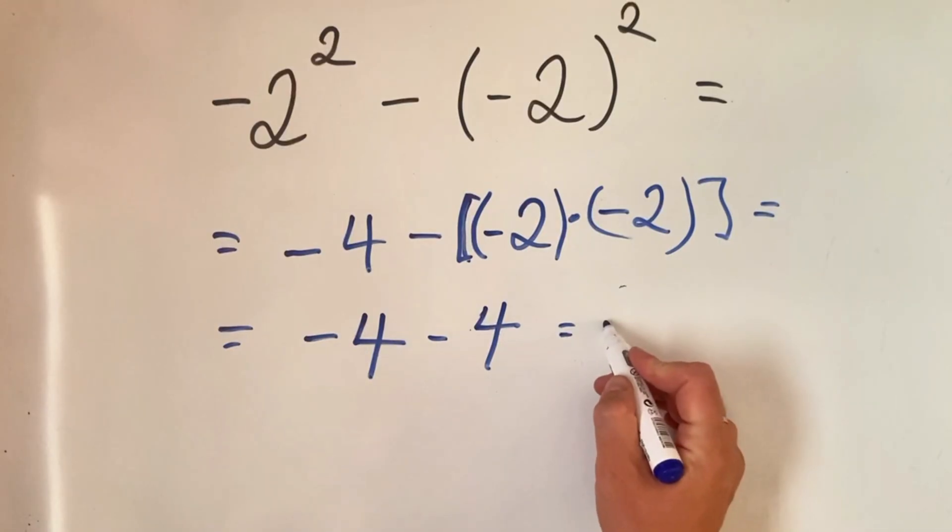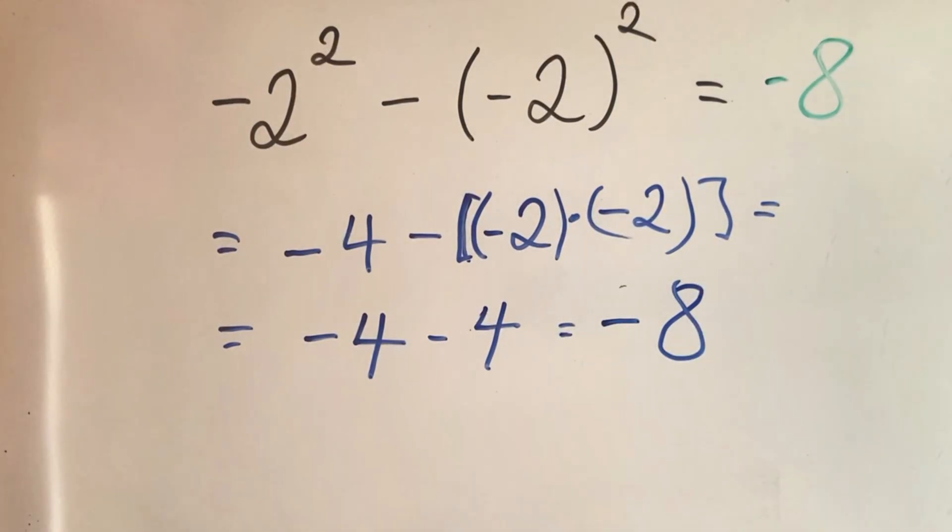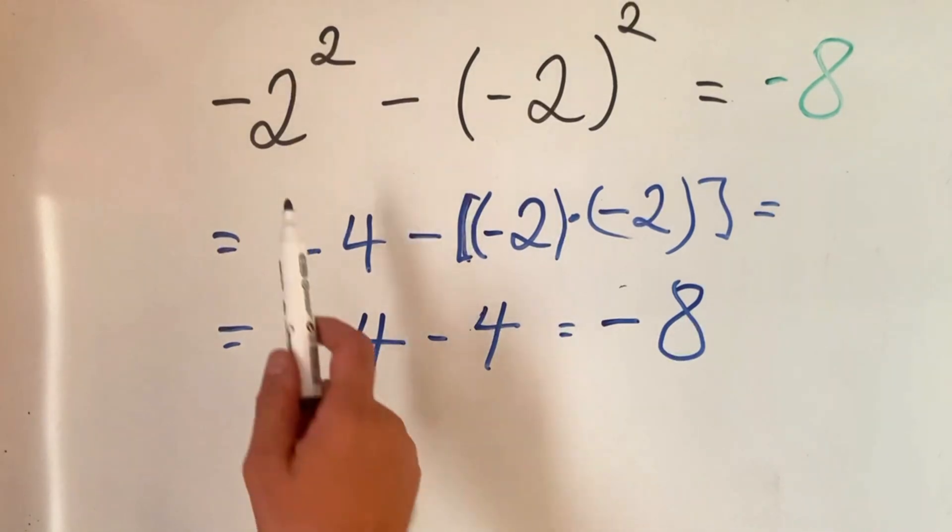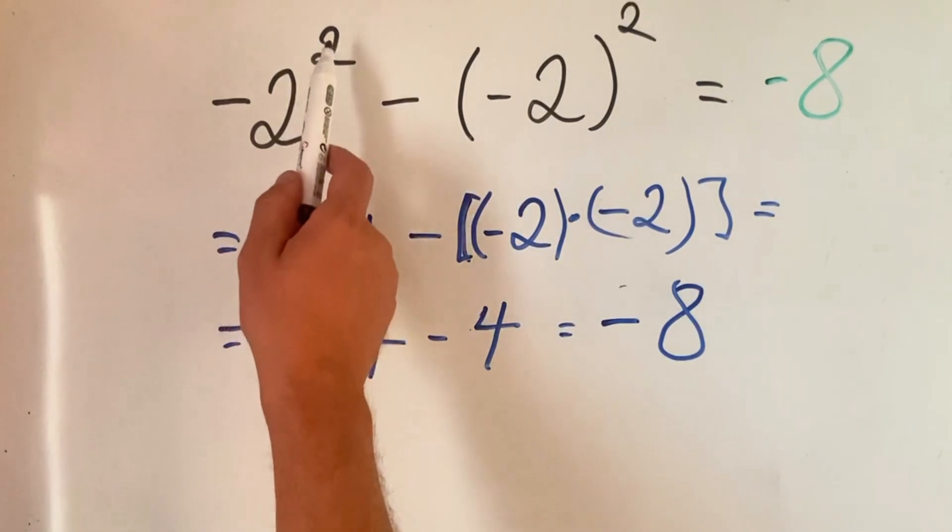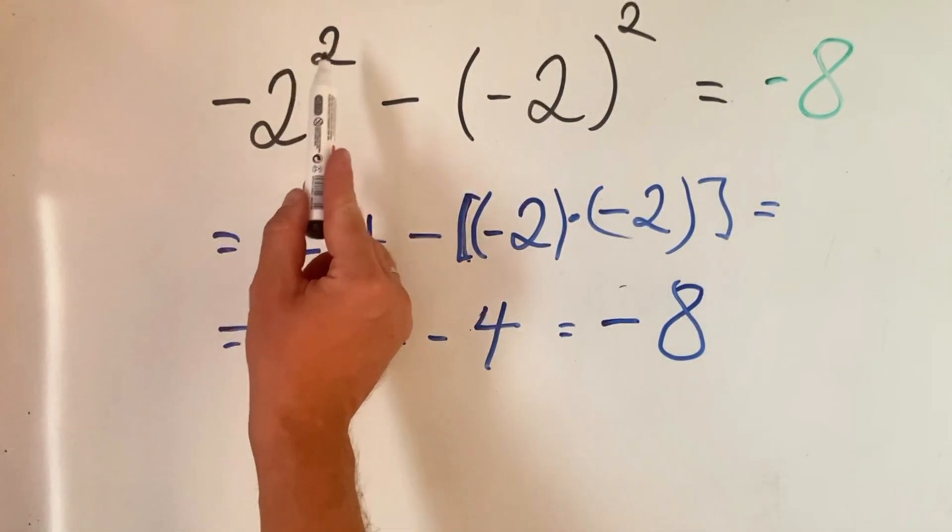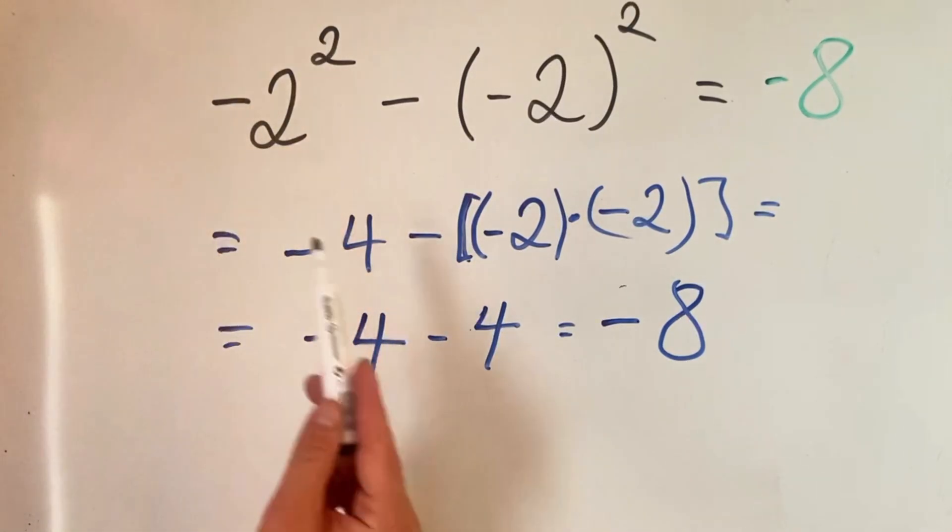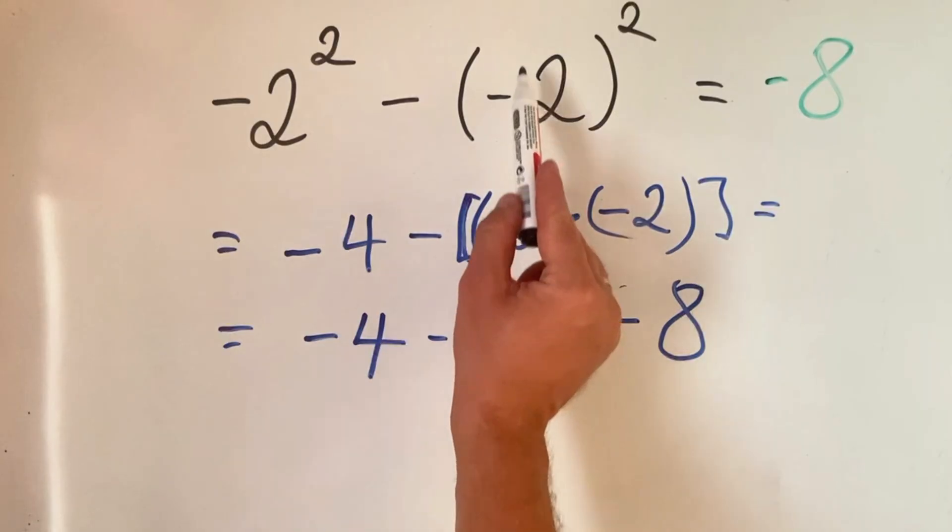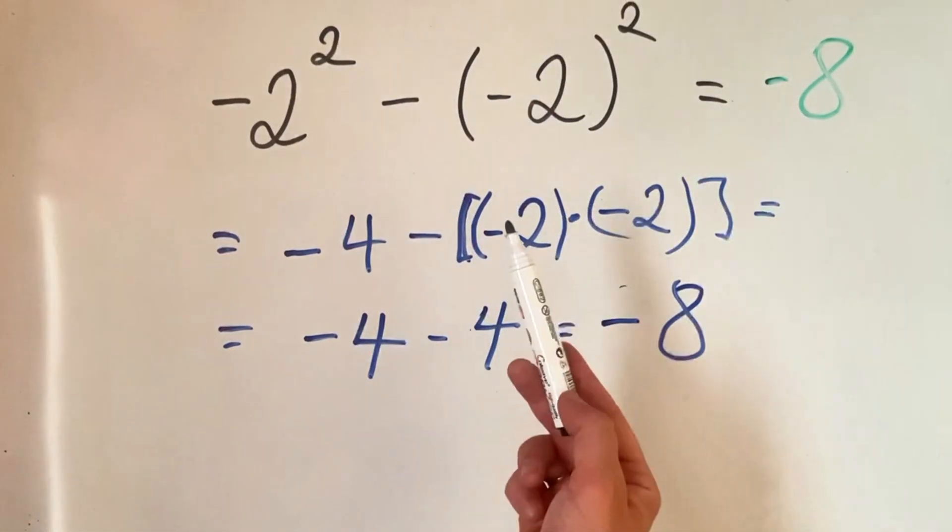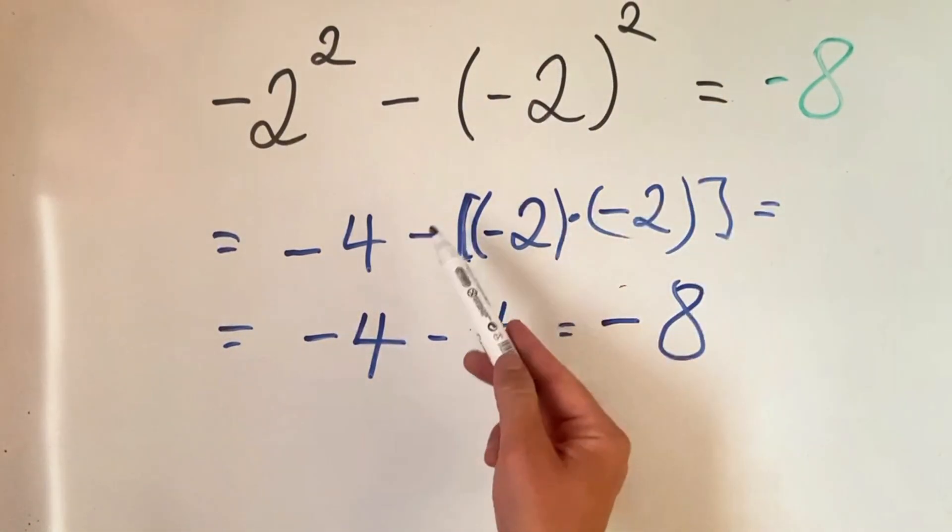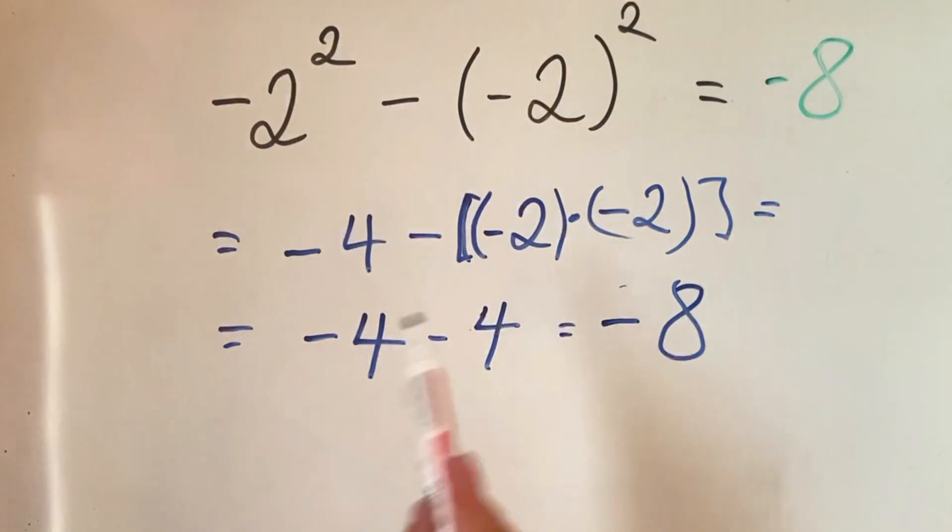And the result is minus eight. So guys, please remember when you have a number and exponent, you just do the exponent on the number itself, the sign stays intact. When you have the number and the sign in brackets at a certain exponent, then you do the number and the sign, which we did here.